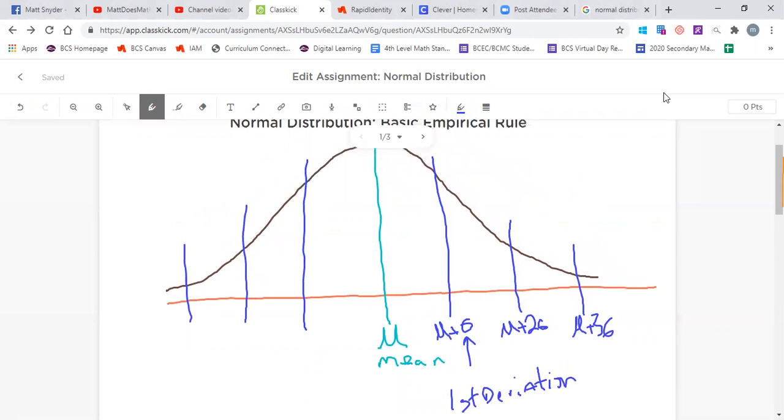At that point, we just keep working down now. We take the mean and we subtract one standard deviation. We take the mean and we subtract two standard deviations and the mean minus three standard deviations.